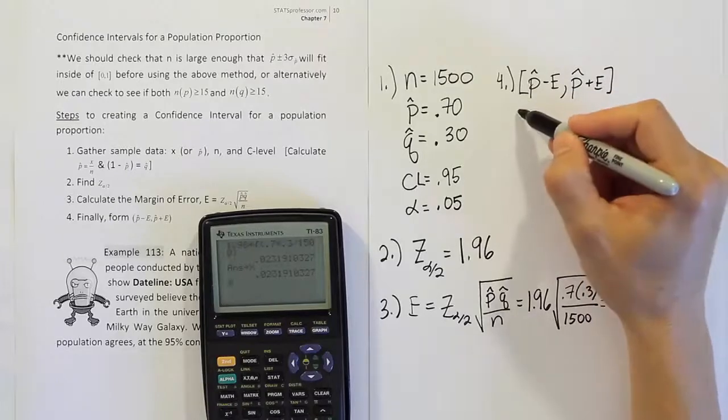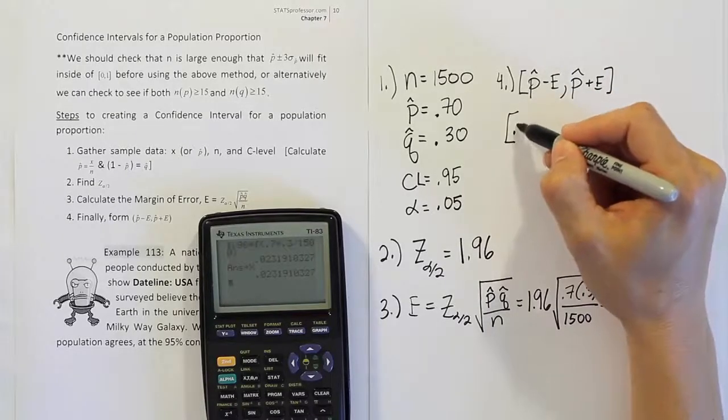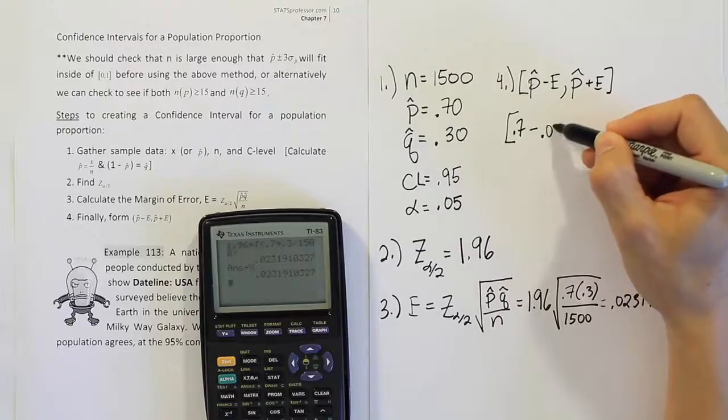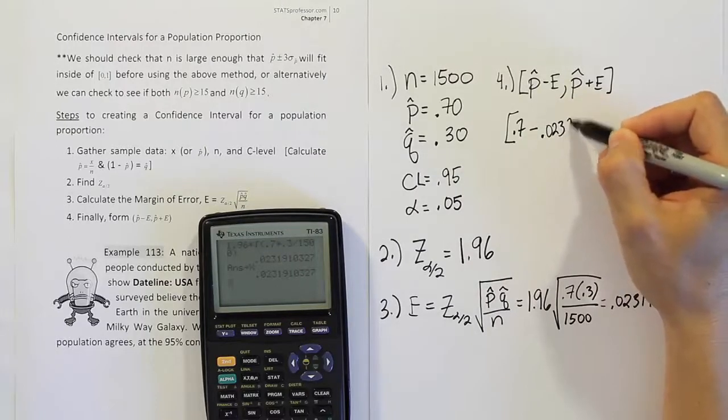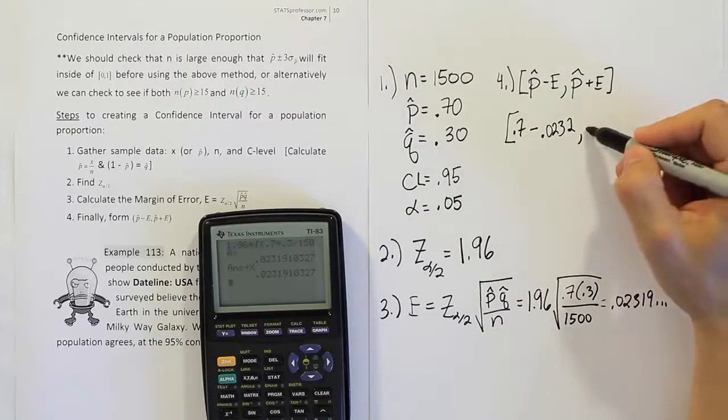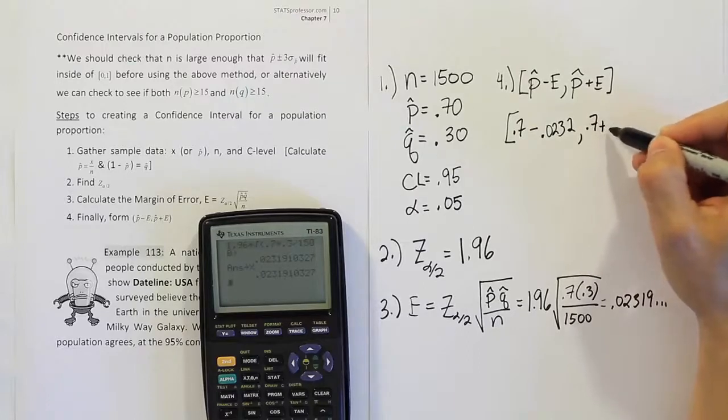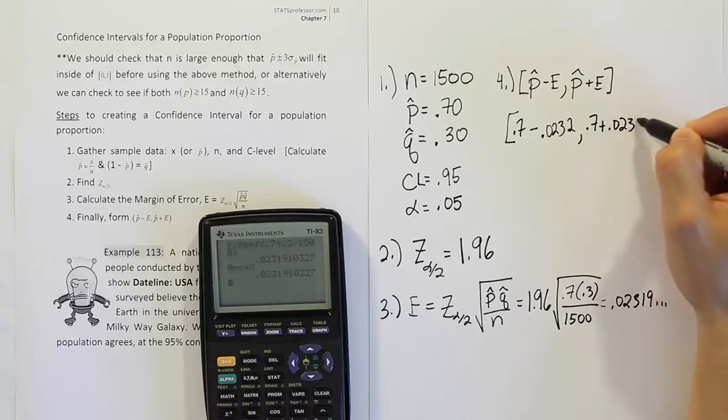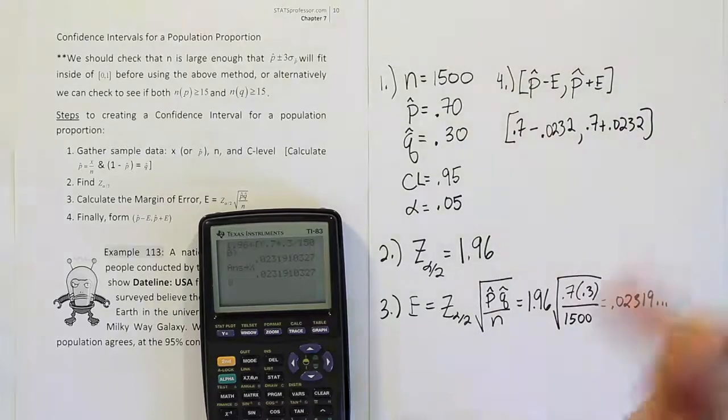And we're going to go ahead and add them together now. The p-hat is 0.7. The e here is 0.0232, let's say, just to round off. 0.7 plus 0.0232. And then we'll do the remaining work.